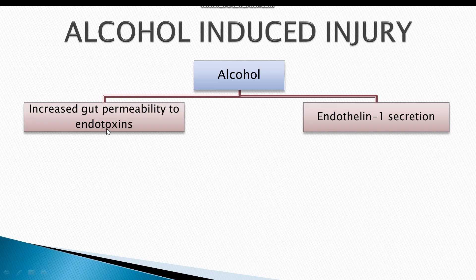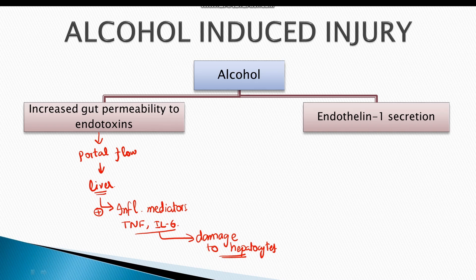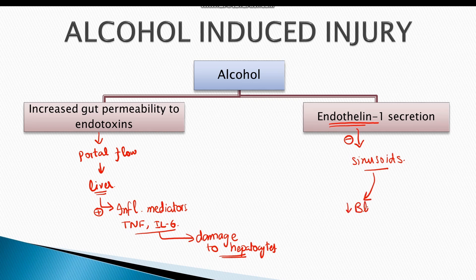Moreover, alcohol also increases the gut permeability to endotoxins. These endotoxins, through the portal blood flow, reach the liver where they cause activation of inflammatory mediators such as tumor necrosis factor and interleukin-6. Activation of these inflammatory mediators results in damage to the hepatocytes and recruitment of neutrophils and leukocytes to the site of inflammation. This recruitment further adds to the damage, resulting in hepatic injury. Moreover, alcohol also affects the sinusoids, resulting in release of endothelin-1 from sinusoidal endothelium. Endothelin-1 constricts the sinusoids, which results in decreased blood flow and ultimately leads to damage to hepatic tissues. All these factors result in hepatocyte inflammation, or alcoholic steatohepatitis.